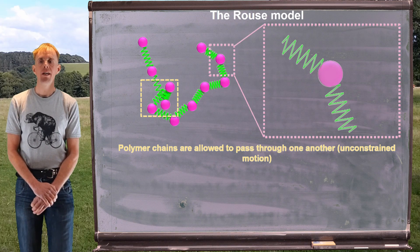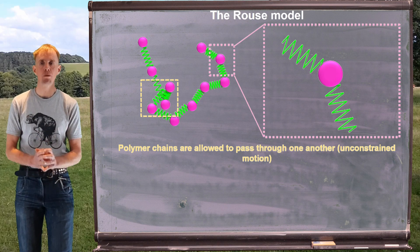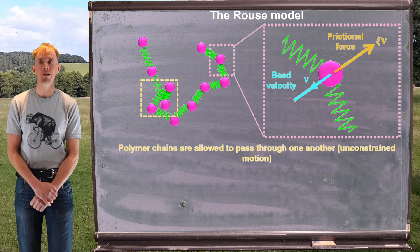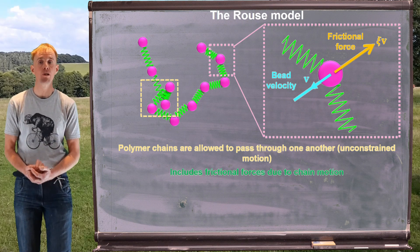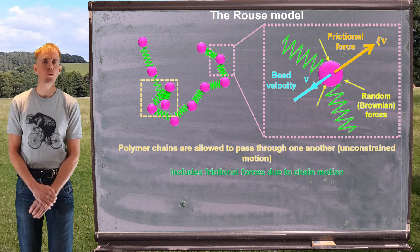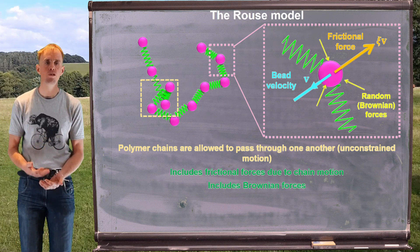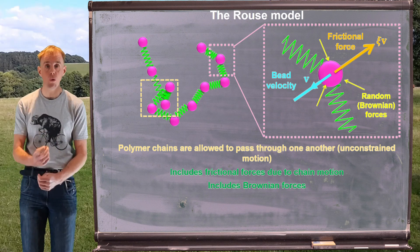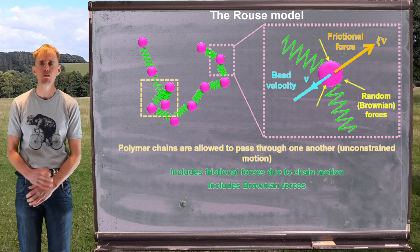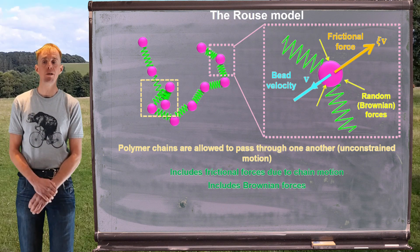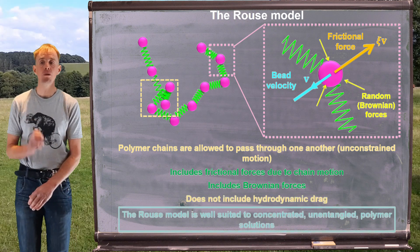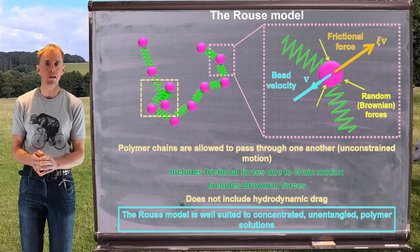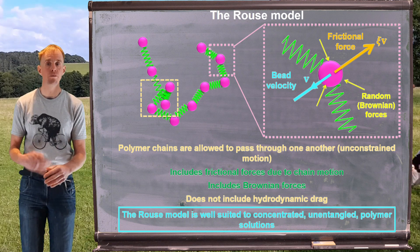The next thing the Rouse model does is to examine the forces that exert on a single bead and then sum them up across the entire chain. If our beads are moving, then they're going to experience a frictional force due to that motion. The other thing we're going to incorporate, because we're thinking on a molecular level, are forces due to Brownian motion. If we've got polymer and a solvent, that solvent is going to have Brownian motion, and that is going to impart a force onto the external entities around it. So the Rouse model includes frictional forces, unconstrained motion of chains, and Brownian forces, but it does not include any notion of hydrodynamic drag.